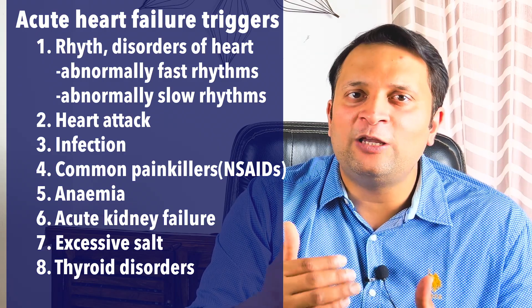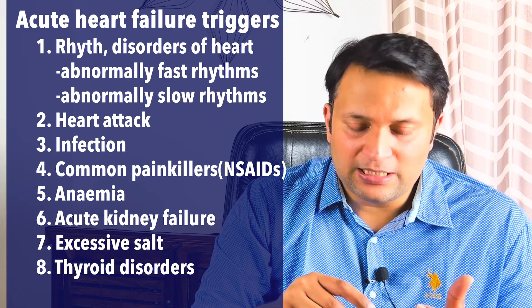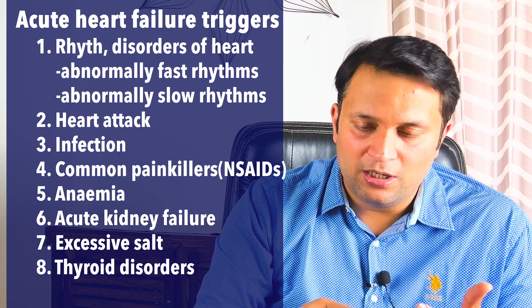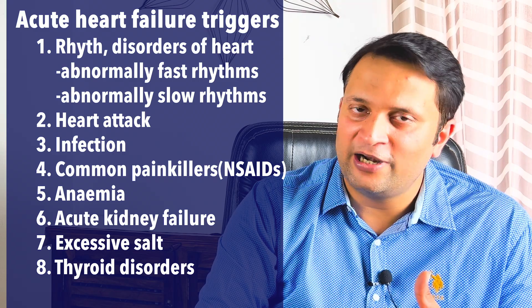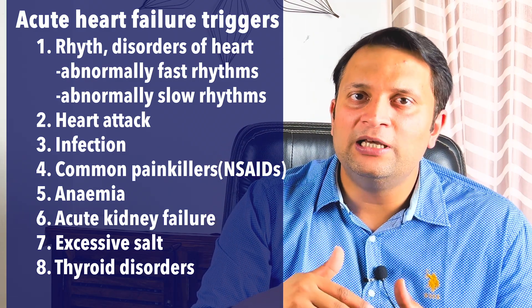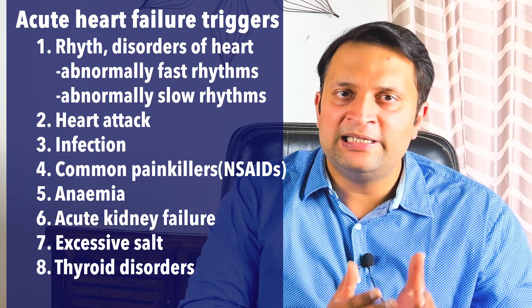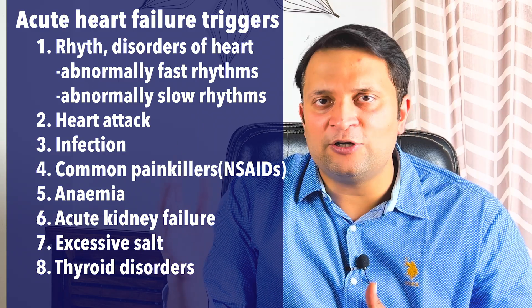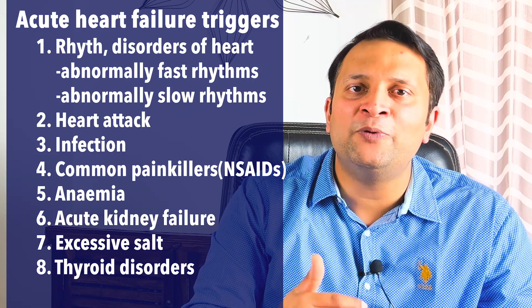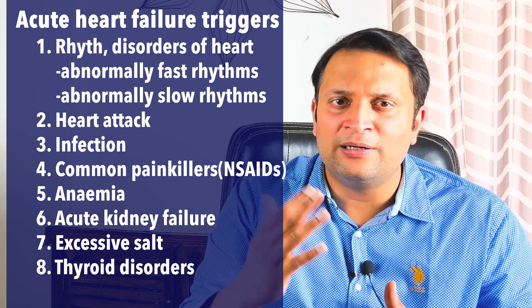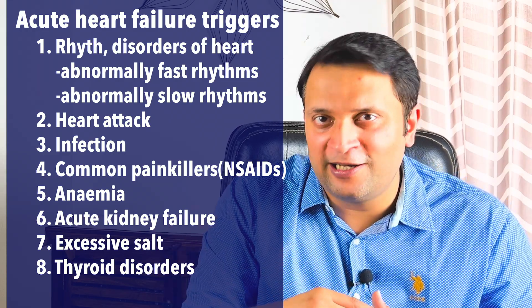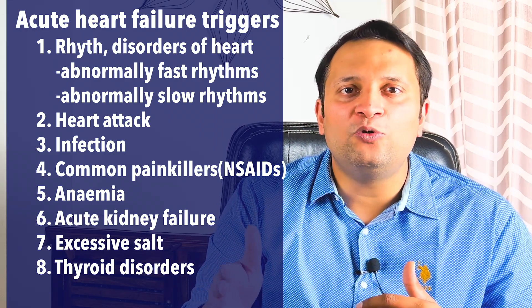We also need to be aware of triggers of acute heart failure that can precipitate acute decompensation in a chronic stable disease. These triggers include rhythm disorders of the heart, acute coronary syndrome or heart attack, anemia, kidney disorders, neurological dysfunction, hyper- or hypo-functioning thyroid gland, non-adherence to prescribed drugs, failure to adhere to salt intake restriction, and consumption of alcohol.